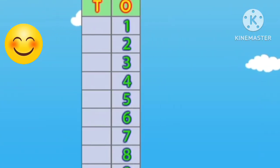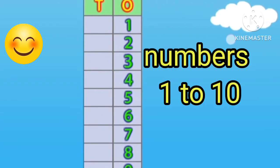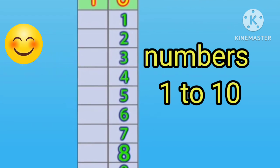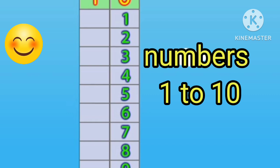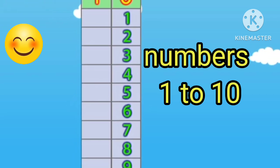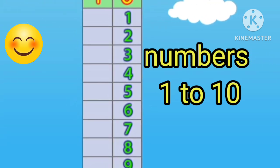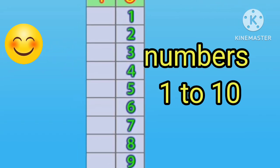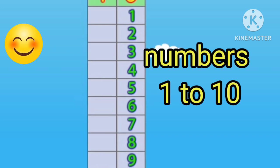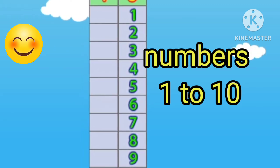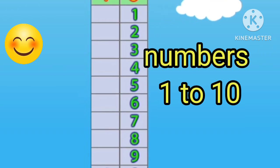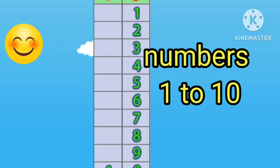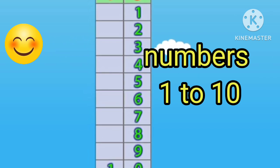The numbers 1, 2, 3, 4, 5, 6, 7, 8, 9 are alone, so we write them under the O column. O means 1s. Number 10 has 1 and 0 together, so we write 1 under the T column and 0 under the O column. T stands for 10s and O stands for 1s.